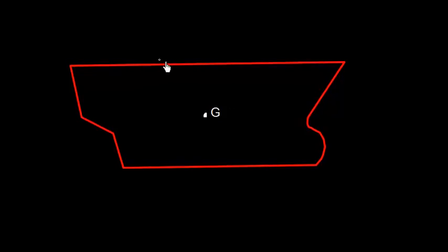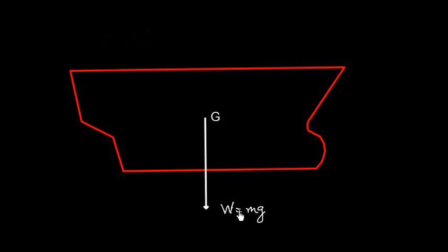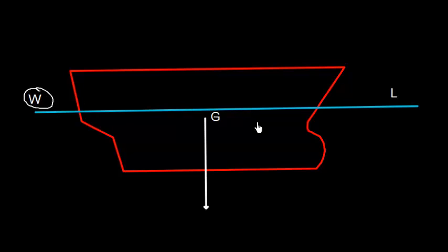In this video I'm going to discuss the basic formula for MCTC — that is Moment to Change the Trim by one centimeter. This is a vessel and this is the center of gravity of the ship. The center of gravity is the point where the total weight of the ship can be assumed to be acting vertically downward. The weight of the ship is capital W, equal to m into G, where m is the mass and G is the acceleration due to gravity, with an average value of 9.8 meters per second squared.